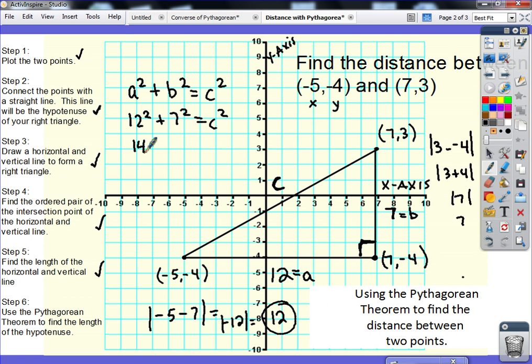But plug those values in. So 12² + 7² = c². My 12 squared would be 144. And my 7 squared would be 49. When I add those two numbers together, I'm going to get 193.